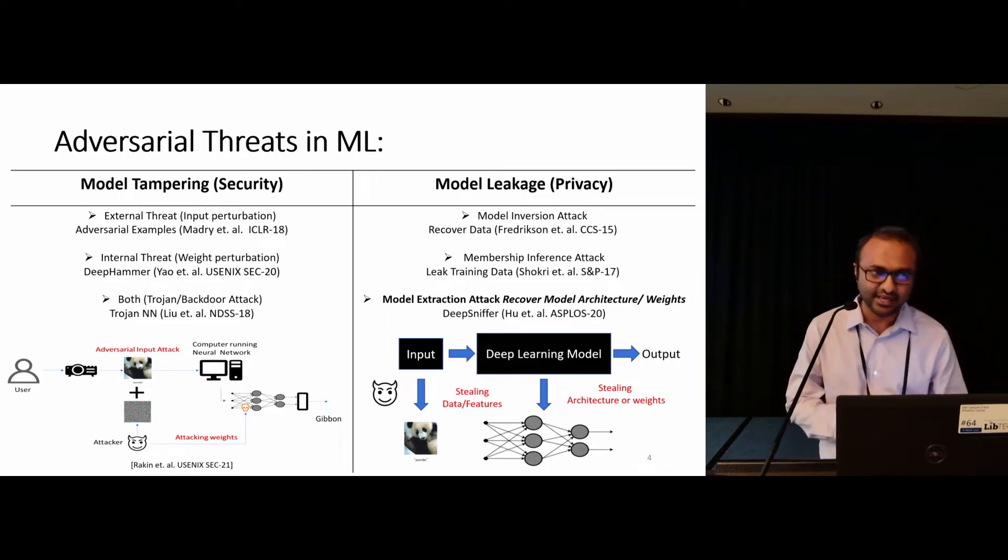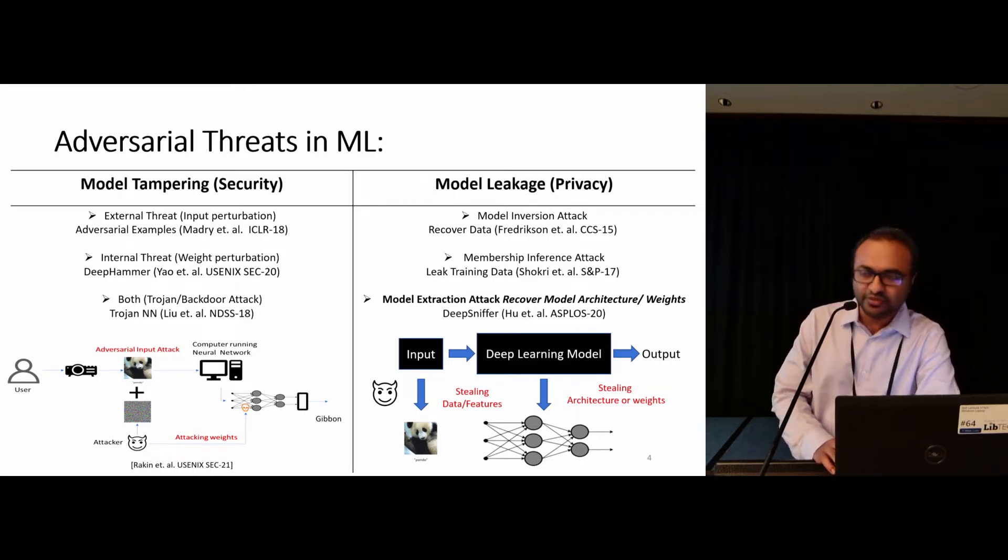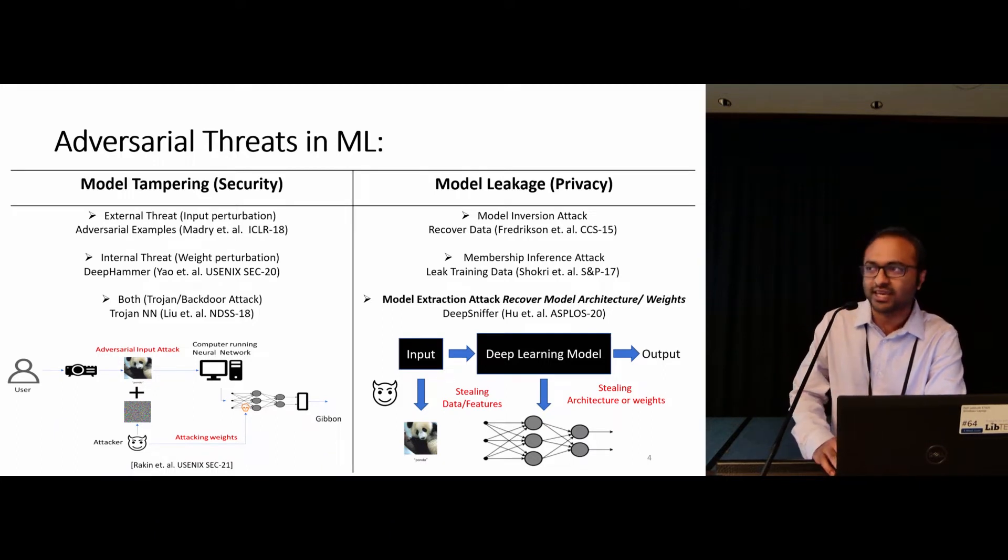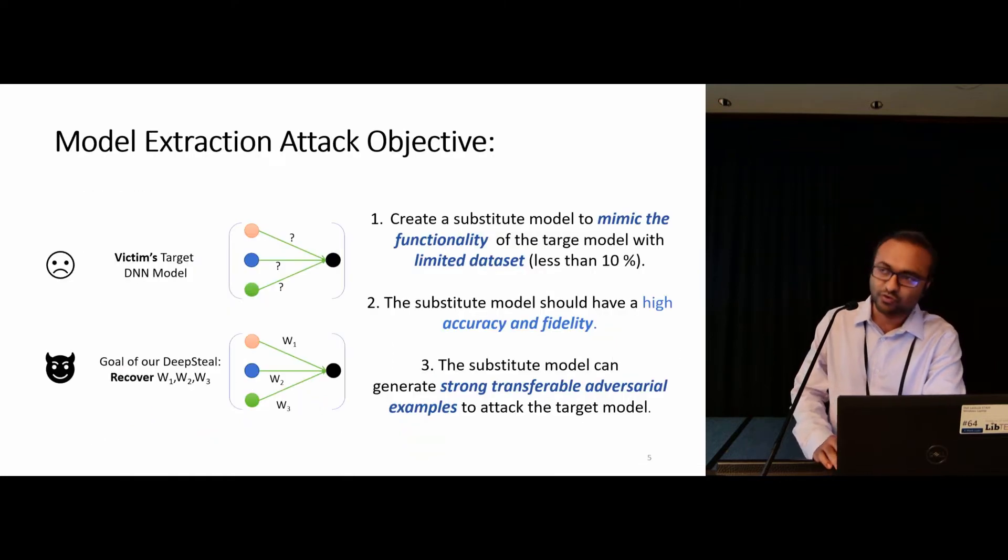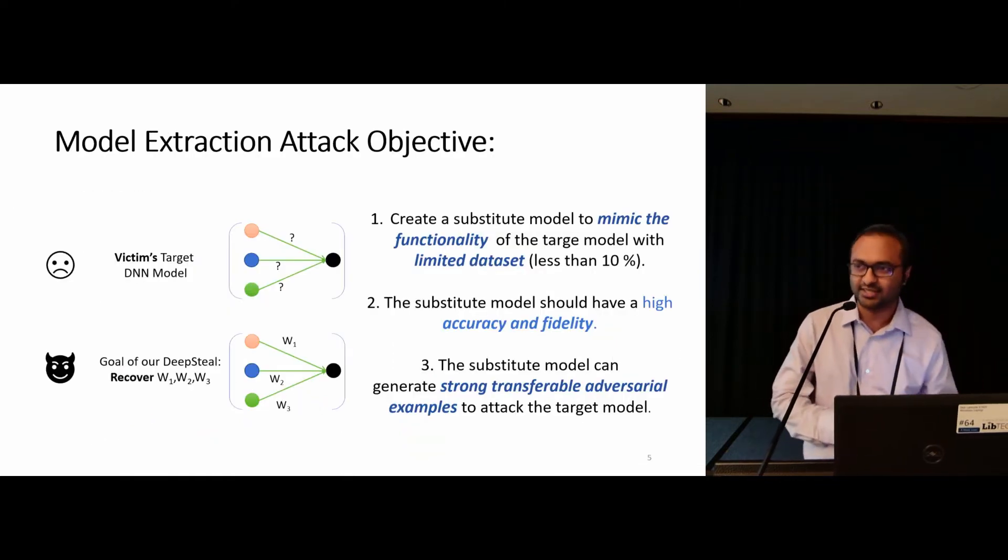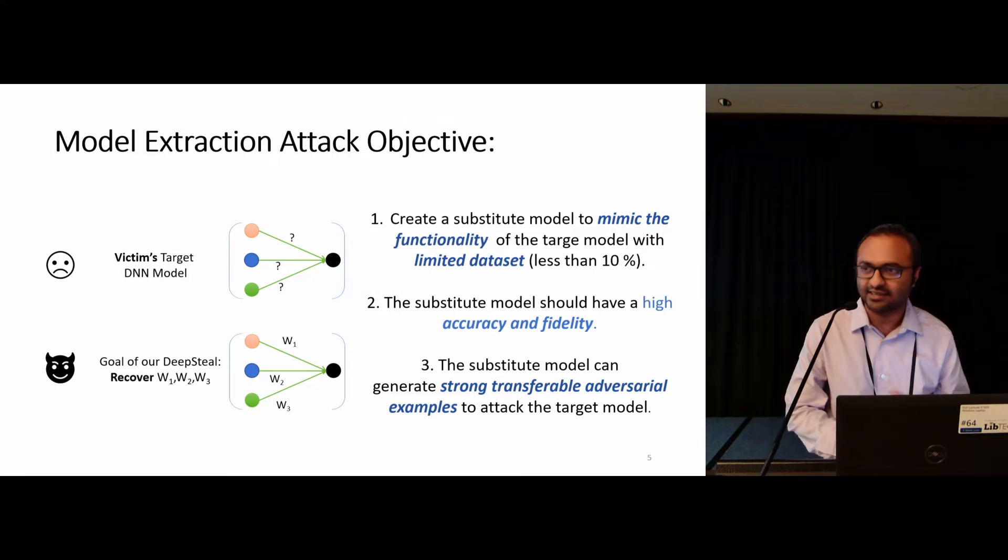In the other class, the attacker tries to steal secret data or feature information. Our concern is the third one, which is the model extraction attack, where the attacker looks to recover model architecture or weight information. In a model extraction attack, the attacker tries to create a substitute model which has similar accuracy and high fidelity as the target model. Potentially, that substitute model can be later used to attack the target victim model using adversarial samples.